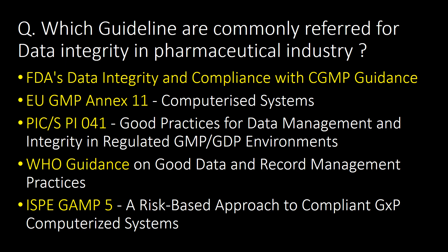Which guidelines are commonly referred to for data integrity in the pharmaceutical industry? Five commonly referred guidelines are: first, FDA's Data Integrity and Compliance with CGMP Guidance; second, EU GMP Annex 11; third, PIC/S guideline; fourth, WHO's guidance; and fifth, ISPE GAMP 5.